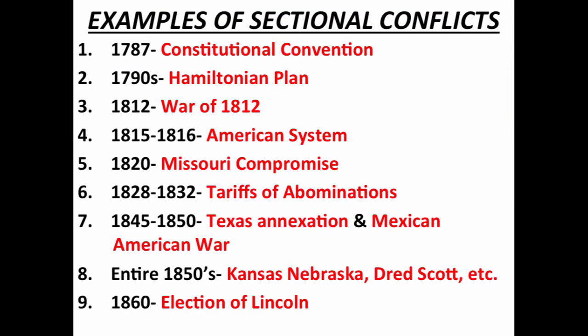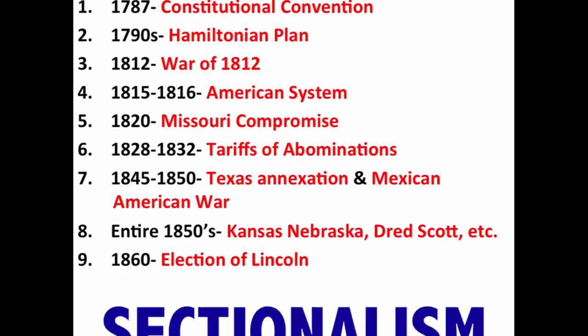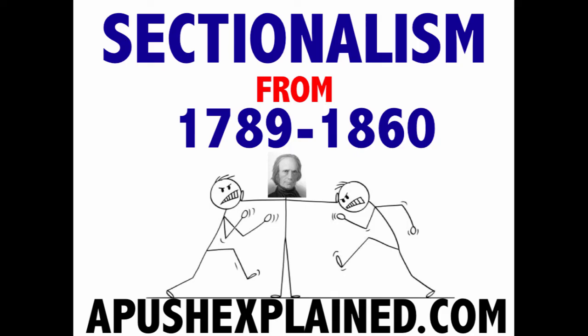As you can see in our nation's history, we've had a lot of sectional conflicts, some of which were able to be resolved temporarily through compromise. But by 1860, things came to a head and we had ourselves a Civil War. That's going to do it for this quick overview of sectionalism from 1789 to 1860. If you have any questions, leave them in the comments, tell a friend about the channel, and check out the website apushexplained.com.